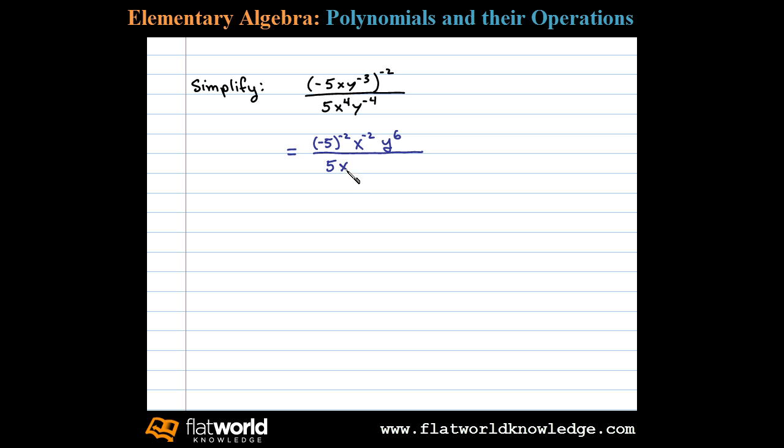Next we take care of factors with negative exponents. Here we have three factors with negative exponents. The factor y to the negative fourth power in the denominator can be written as y to the positive 4 power in the numerator. Similarly, x to the minus 2 can be written as x squared in the denominator, and negative 5 to the negative 2 power is equivalent to negative 5 squared in the denominator.